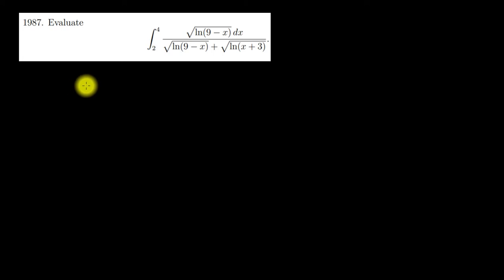Here we are going to be looking at a nice integral problem from a 1987 Putnam problem. We are asked to evaluate the integral from 2 to 4 of the square root of natural log of 9 minus x, all divided by the square root of natural log of 9 minus x plus the square root of natural log of x plus 3, with respect to x.